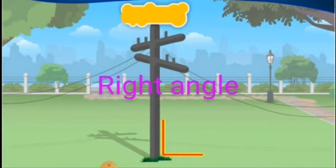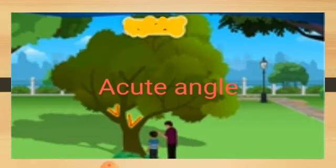There is an angle between the electric pole and the ground. This picture shows an acute angle. We see angles between the tree trunk and its branches. This also shows an acute angle.